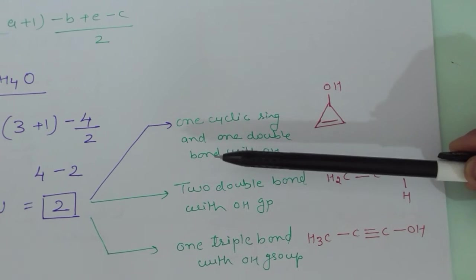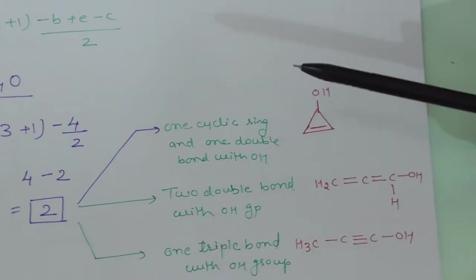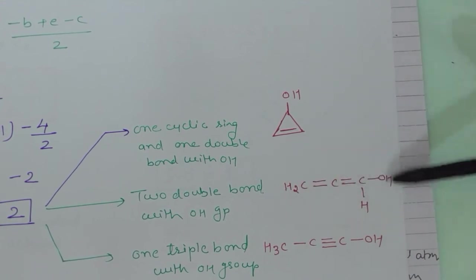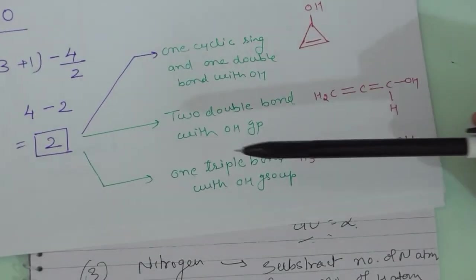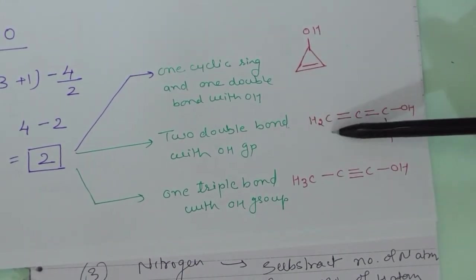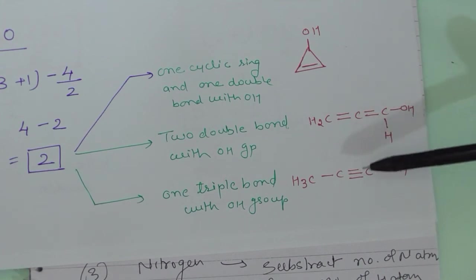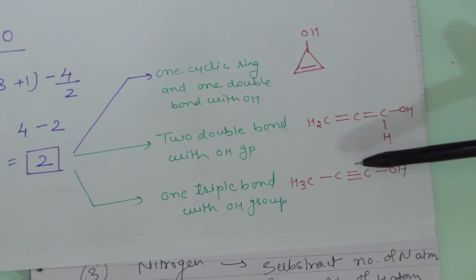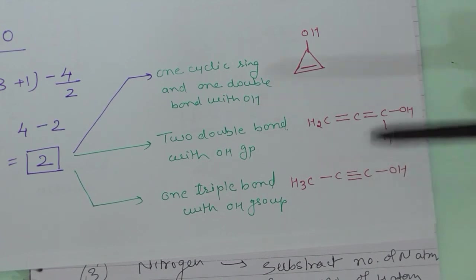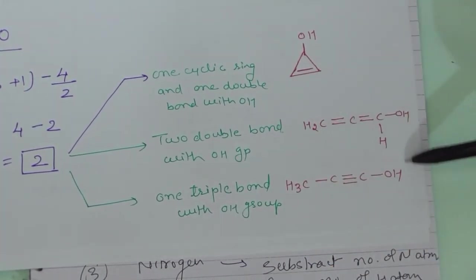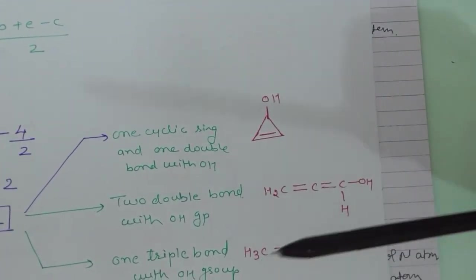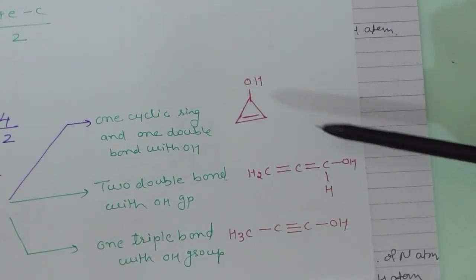With degree of unsaturation two for C3H4O, there are three possible structures: one ring with one double bond and an OH group, or two double bonds with an OH group, or one triple bond with an OH group. A triple bond counts as two degrees of unsaturation. So from this empirical formula, we can identify three possible structures all containing an OH functional group.